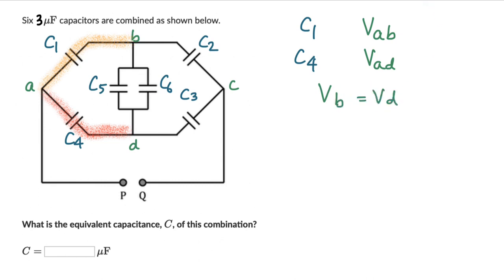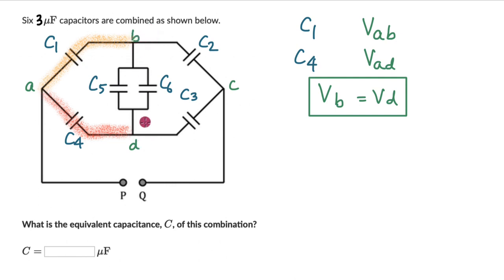Since VB equals VD, there is no potential difference between B and D, which means no charge flows through the branch containing C5 and C6. So these two capacitors play no role in the overall circuit. The problem now reduces to just four capacitors: C1, C2, C3, and C4.